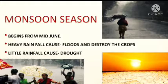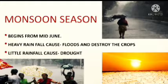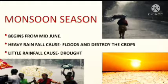The monsoon season begins from mid-June. By mid-July, most states of India experience moderate to high rainfall. However, the monsoon season in India is full of uncertainties. Sometimes it rains heavily causing floods which destroy crops. Sometimes the rainfall is so scanty that there is a drought. Cyclones also hit states like Odisha, Andhra Pradesh, and Tamil Nadu.